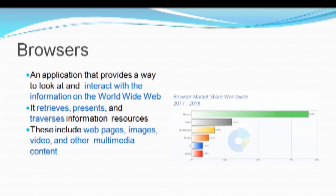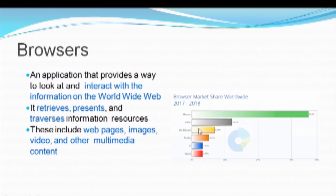The basic common term we should know is: what are browsers? A browser is nothing but an application where we interact with information on the World Wide Web. It is basically an application where we retrieve, present and traverse our information using certain resources. Those resources might be your web pages, images, video and other multimedia content. There are a few basic browsers listed, for example: Opera, IE, Firefox, UC Browser, Safari, Chrome. The graph shows the market ratio - the users which have been using each particular browser. The most commonly used browser is Chrome.